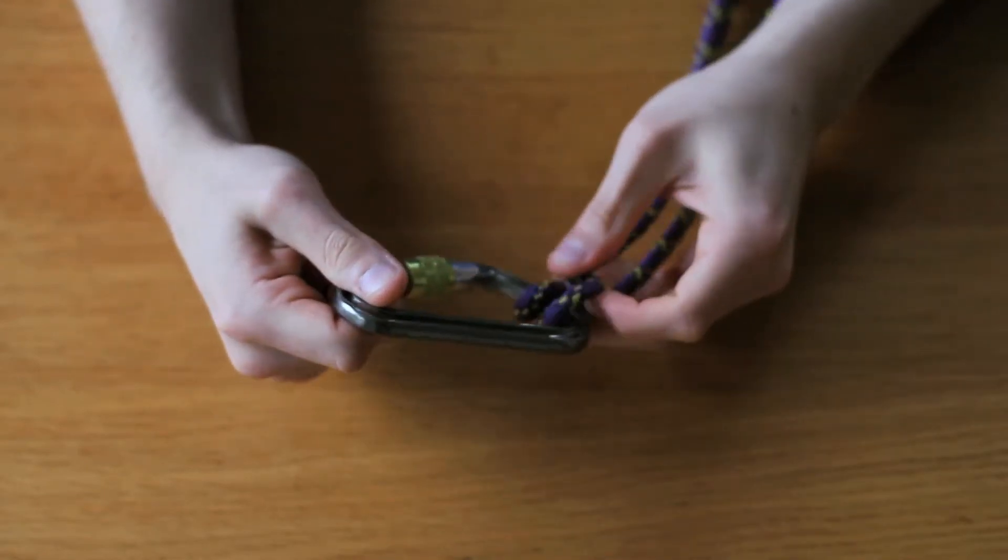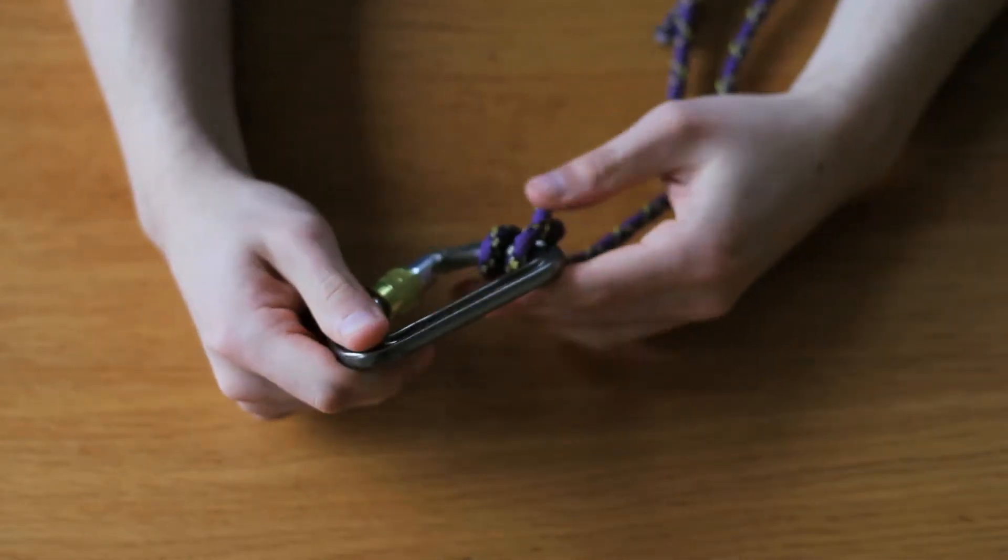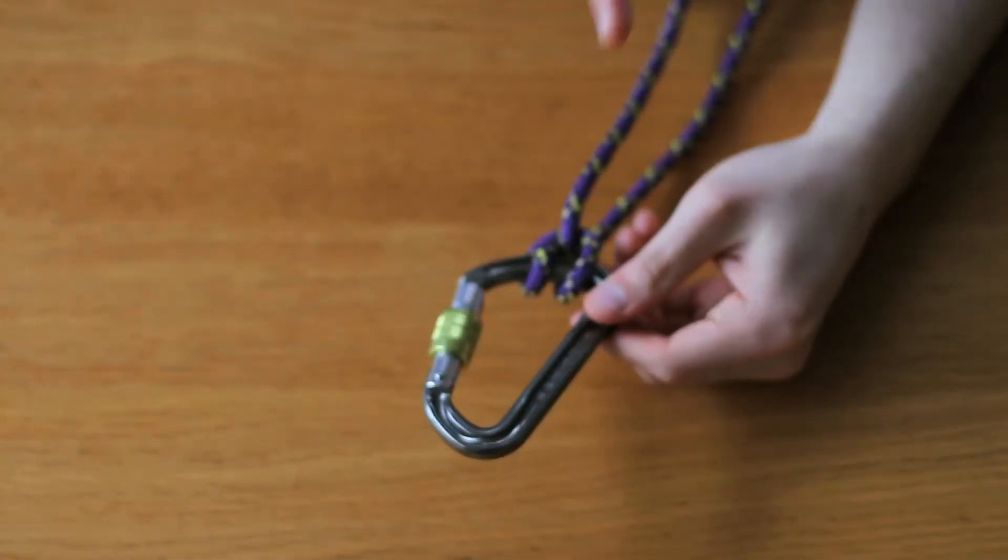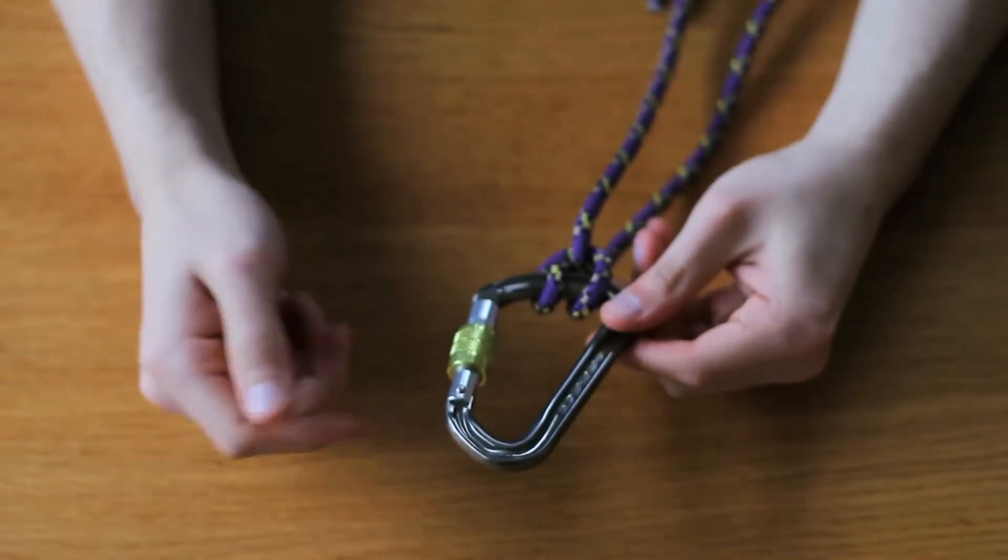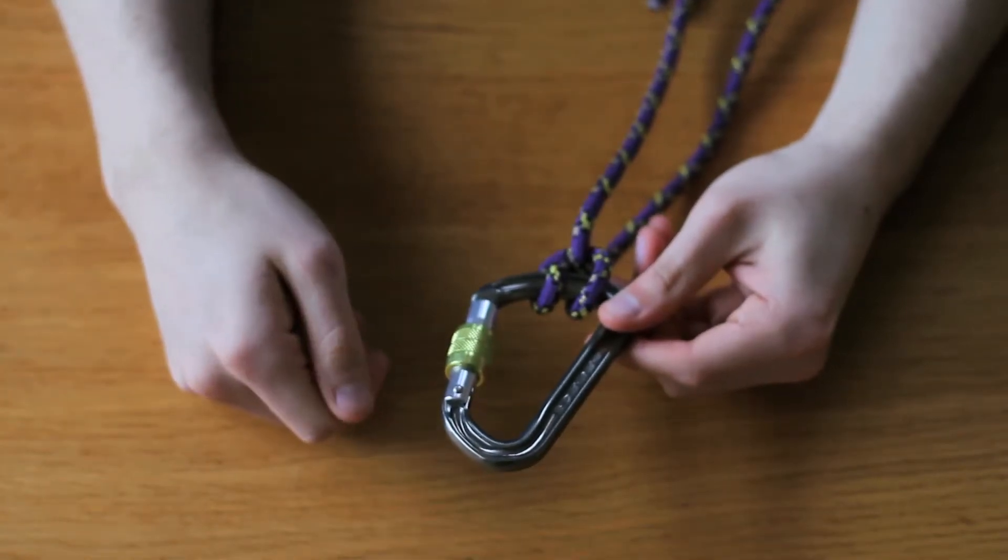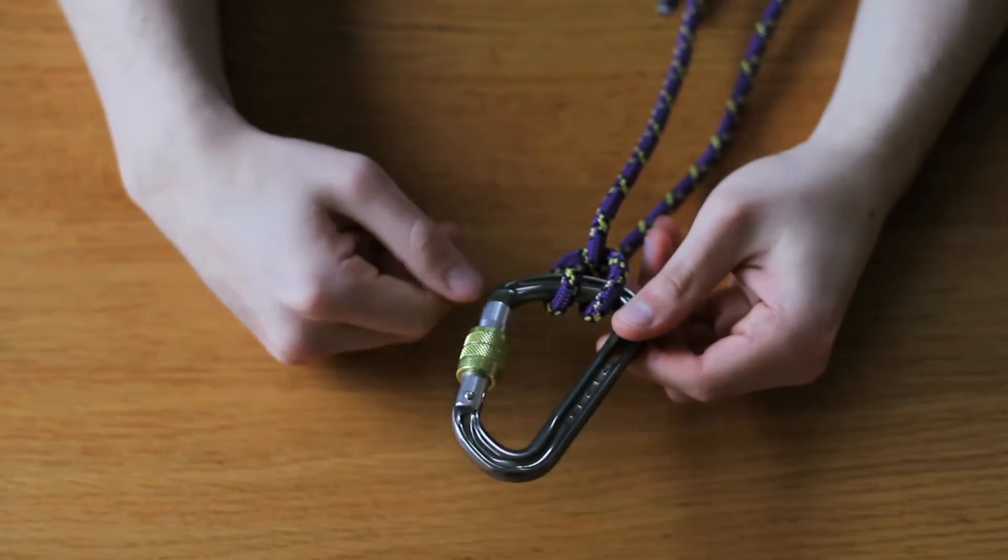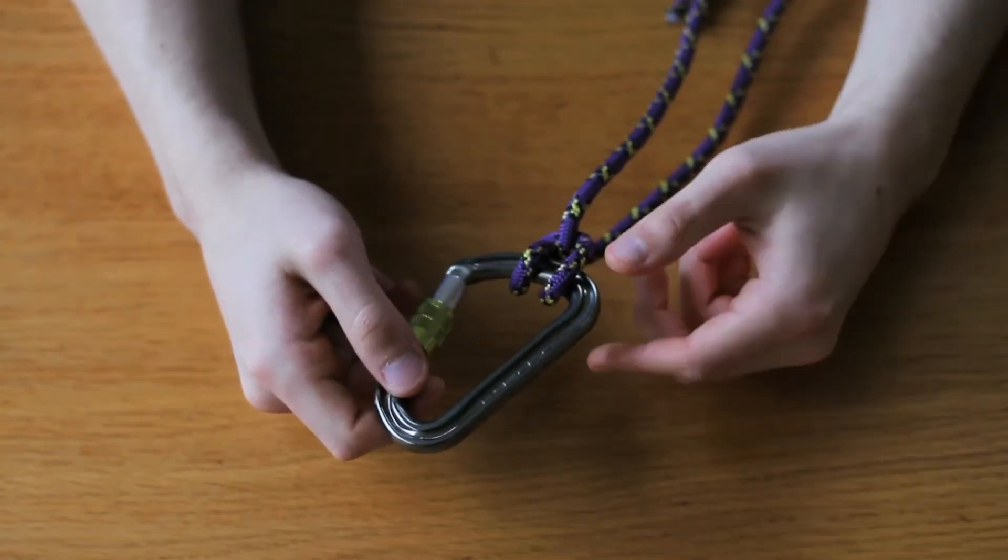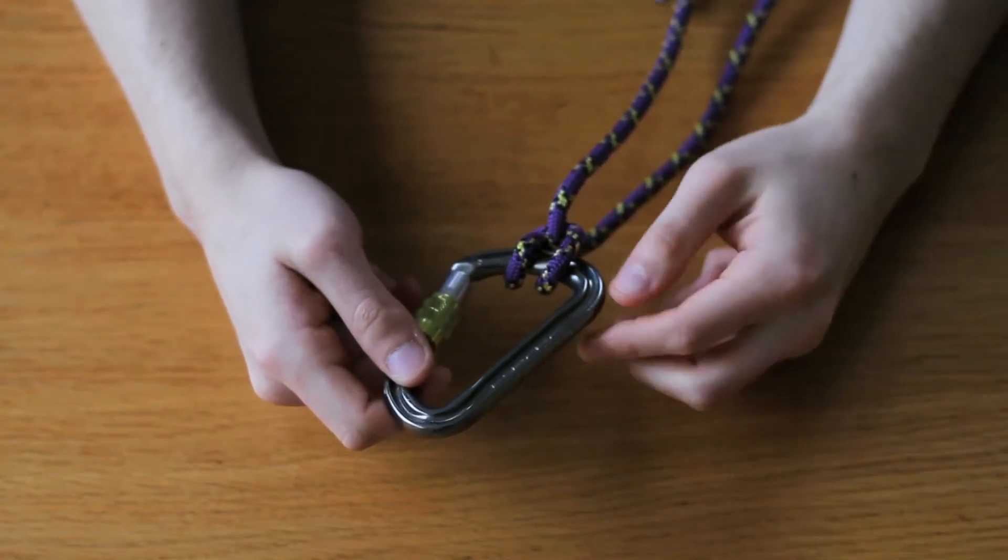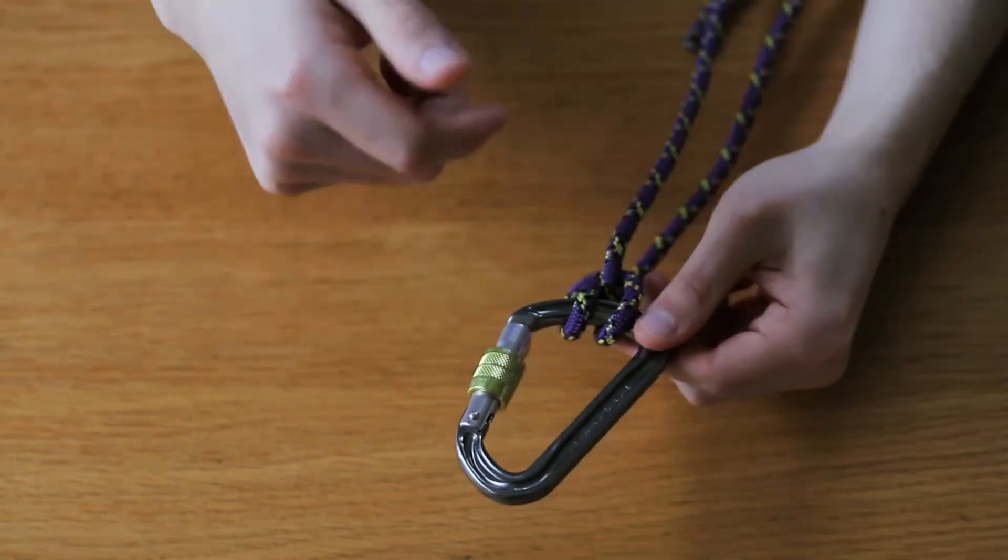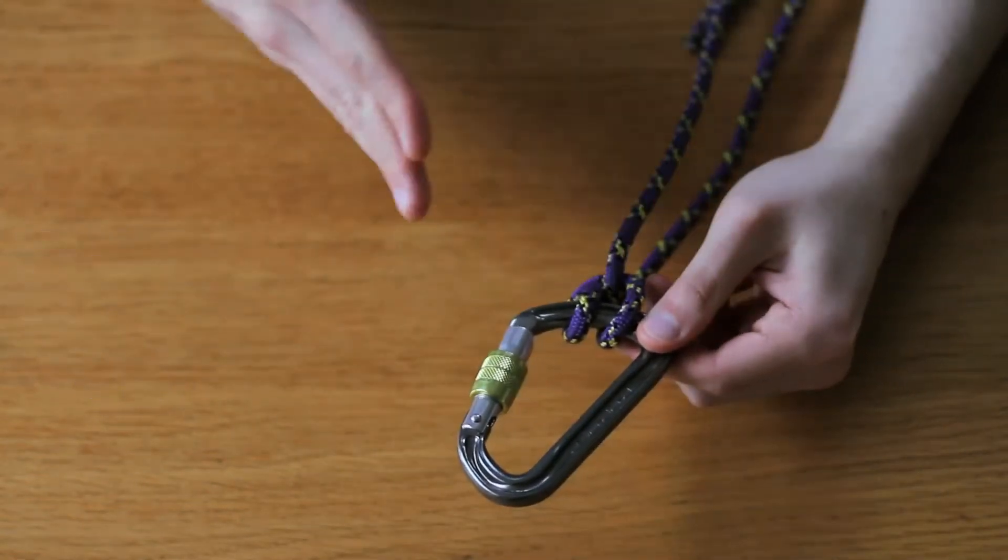Now why would a climber want to use this? Well, let's say that you get to the top of your sport climb and you've got three bolts in the wall. You may decide to build your anchor system or belay with a cordelette or a sling, or you may want to use the climbing rope. And this is where the clove hitch comes in. A lot of climbers will clove hitch the rope three different times to the anchor systems.